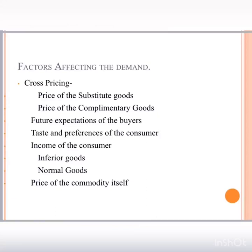The second factor is future expectation of buyers. Buyers purchase depending upon their perception of future prices. If I feel onions will become expensive in the near future, I will purchase maximum quantity now to avoid higher prices later. If I expect onions to become cheaper, I will purchase less now to benefit from lower prices later. So depending upon future expectations, demand goes up and down.